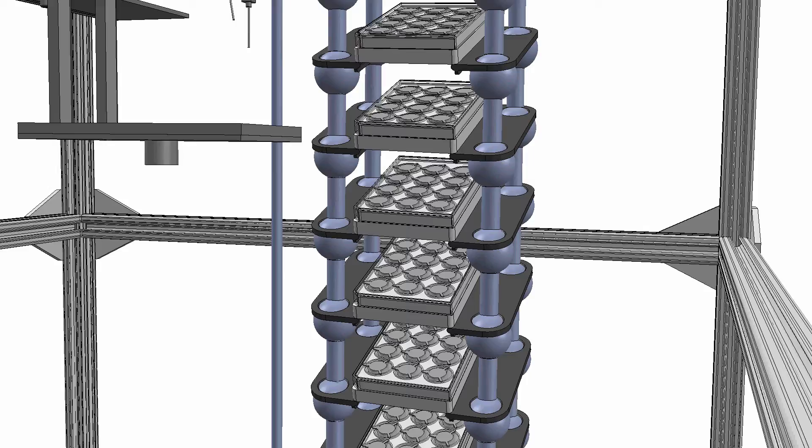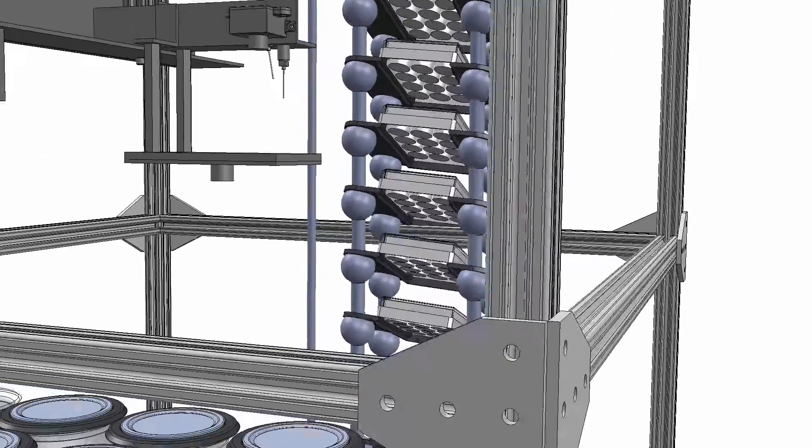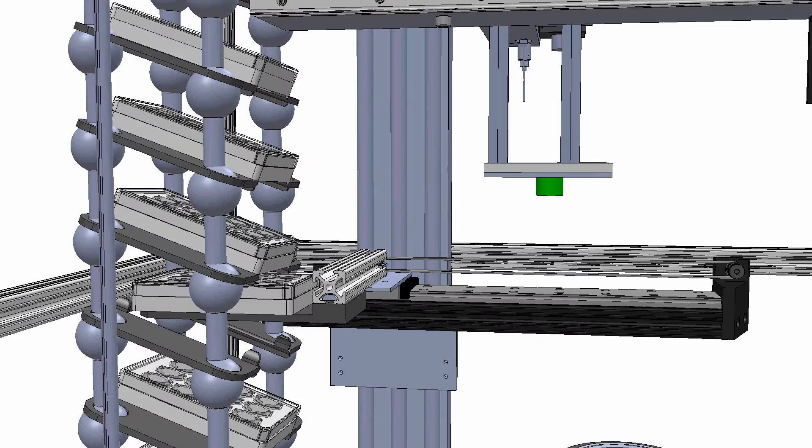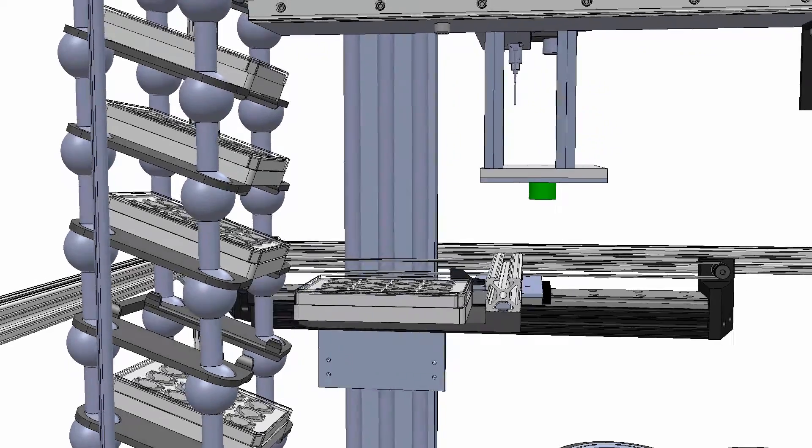Let's follow a typical cycle of this robot. The tower nutates the 10 well plates to keep the bacteria in suspension. The nutator momentarily stops while the arm lifts one well plate up and then out of the tower.